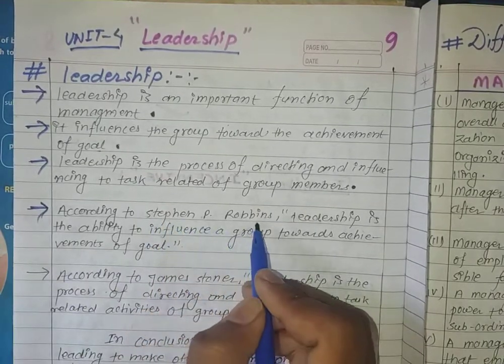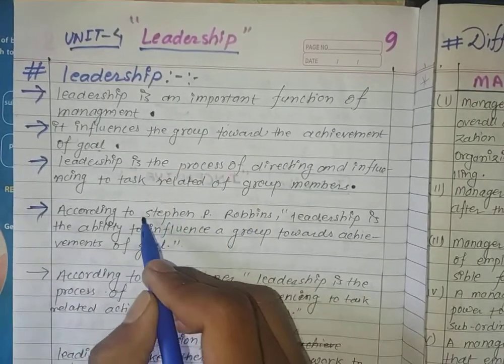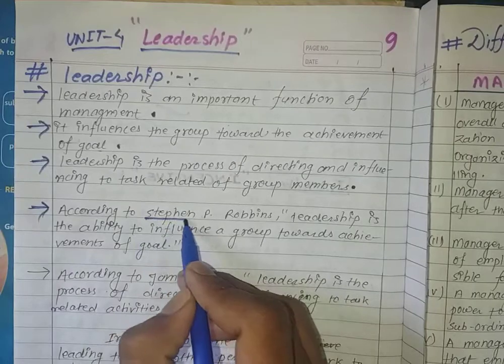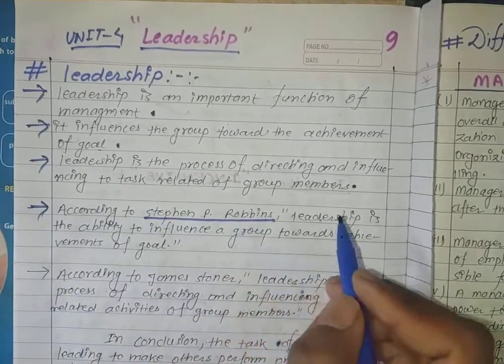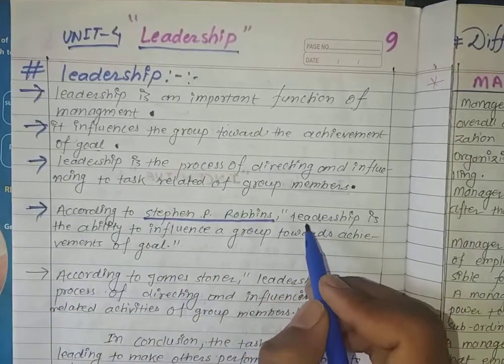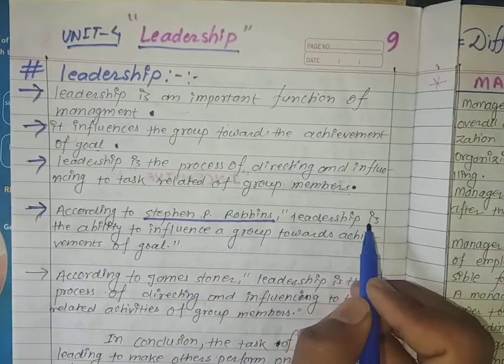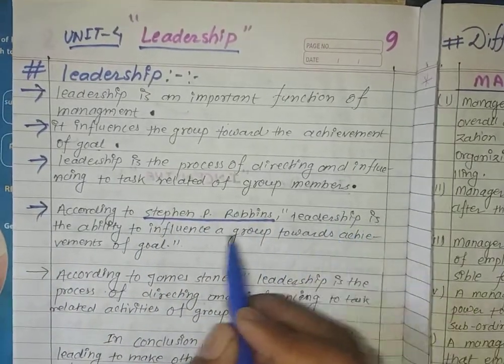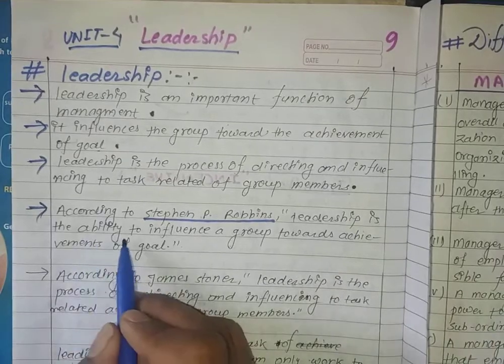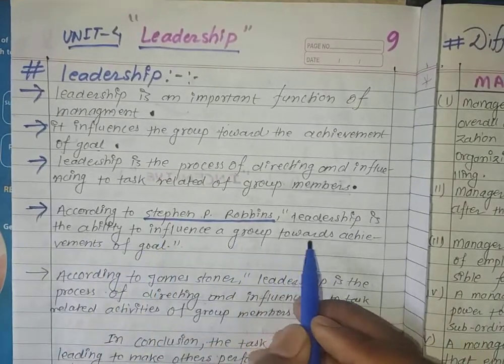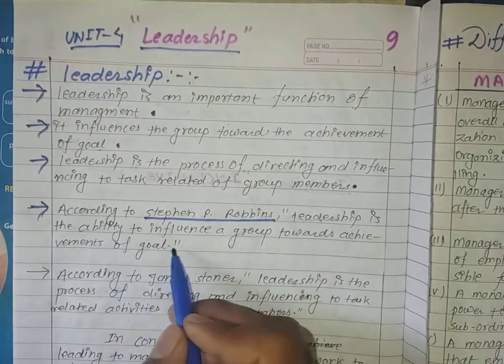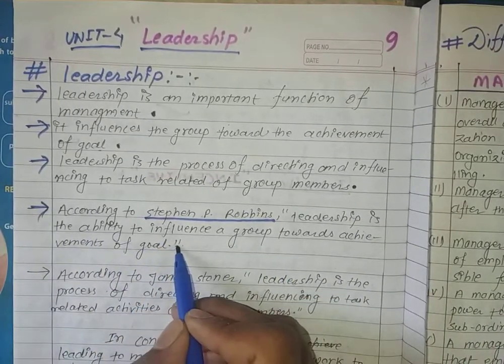According to Stephen P. Robbins, leadership is the ability to influence a group toward the achievement of a goal.